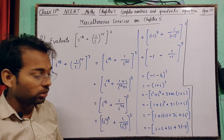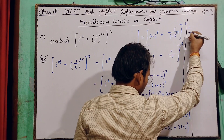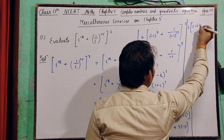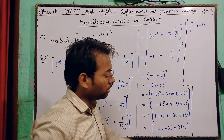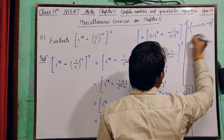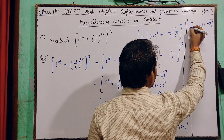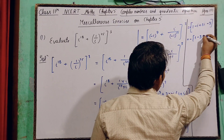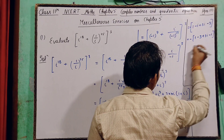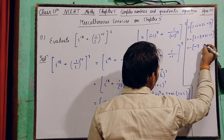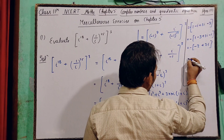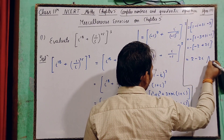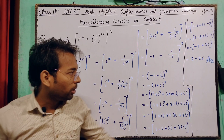अब simplify करते हैं: bracket में 1 - i + 3i - 3। Real parts: 1 - 3 = -2। Imaginary parts: 3i - i = 2i। So bracket = -2 + 2i। Minus sign लगाने पर: -(-2 + 2i) = 2 - 2i। That's your answer।